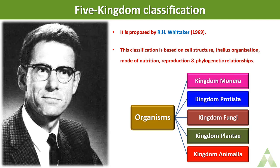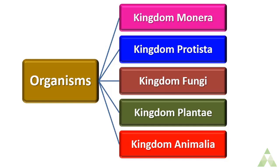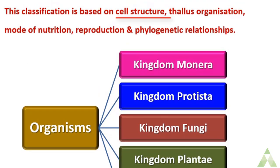Next came the five-kingdom classification, proposed by Whittaker in 1969. He went into deeper classification and included Monera, Protista, Fungi, Plantae, and Animalia. Unlike the previous classification based only on cell wall presence or morphological characteristics, Whittaker's five-kingdom classification was more advanced and specific.